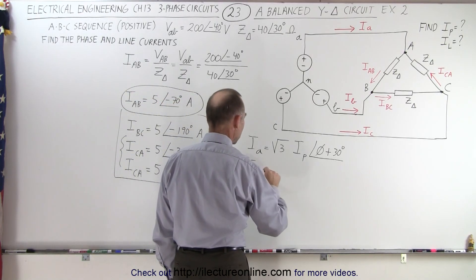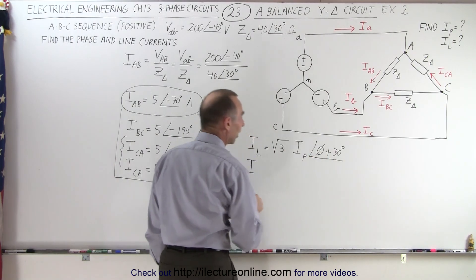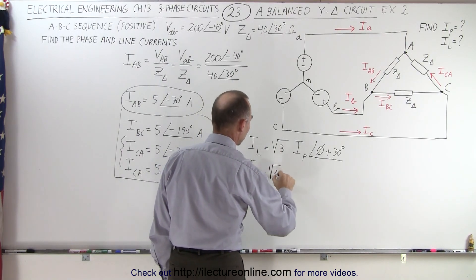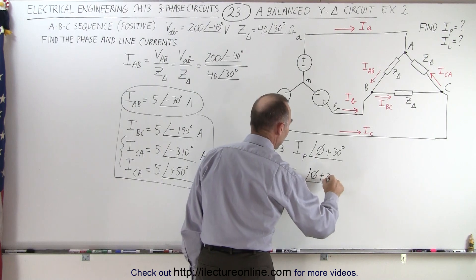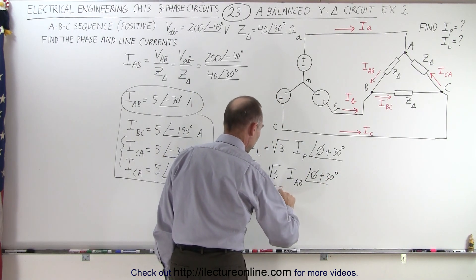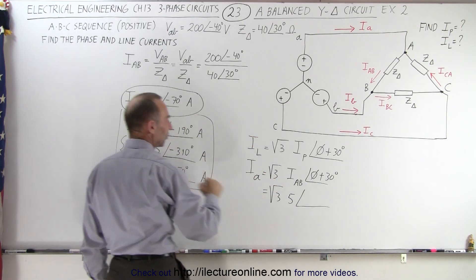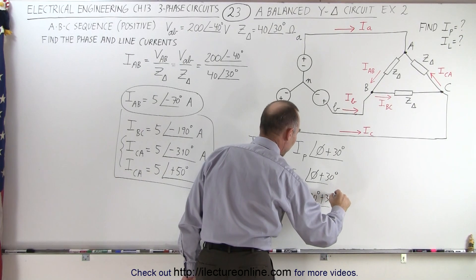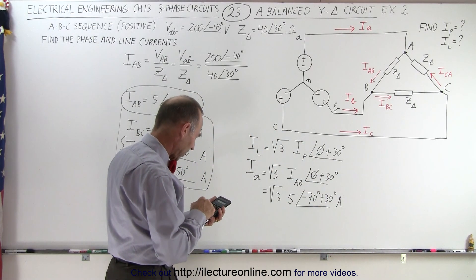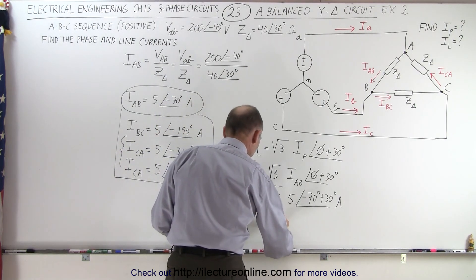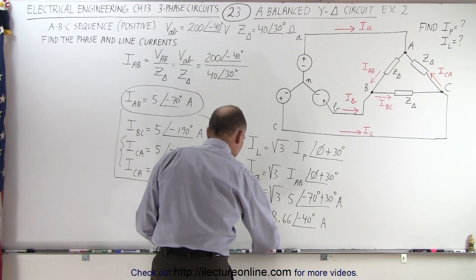So IA equals the square root of 3 times IAB, with the phase angle adjusted by 30 degrees. That is the square root of 3 times 5 amps, with a phase angle of minus 70 degrees plus 30 degrees. The square root of 3 times 5 gives us 8.66, so IA equals 8.66 amps with a phase angle of minus 40 degrees.